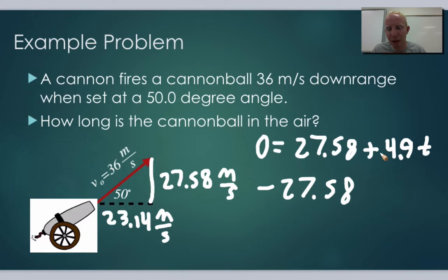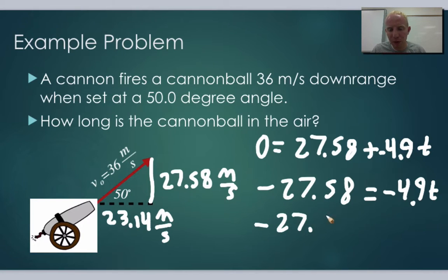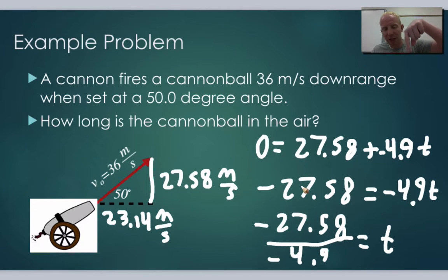We need to use negative gravity here because gravity acts downward while the initial vertical velocity is upward. So the correct form is: negative 27.58 equals negative 4.9t. Make sure in these problems you use the negative version of g.